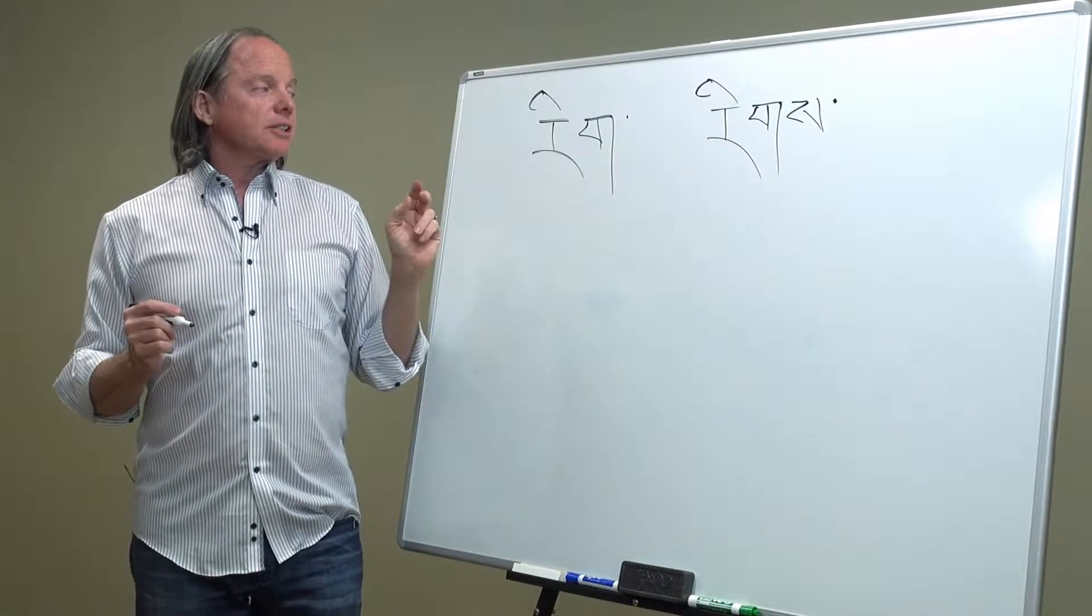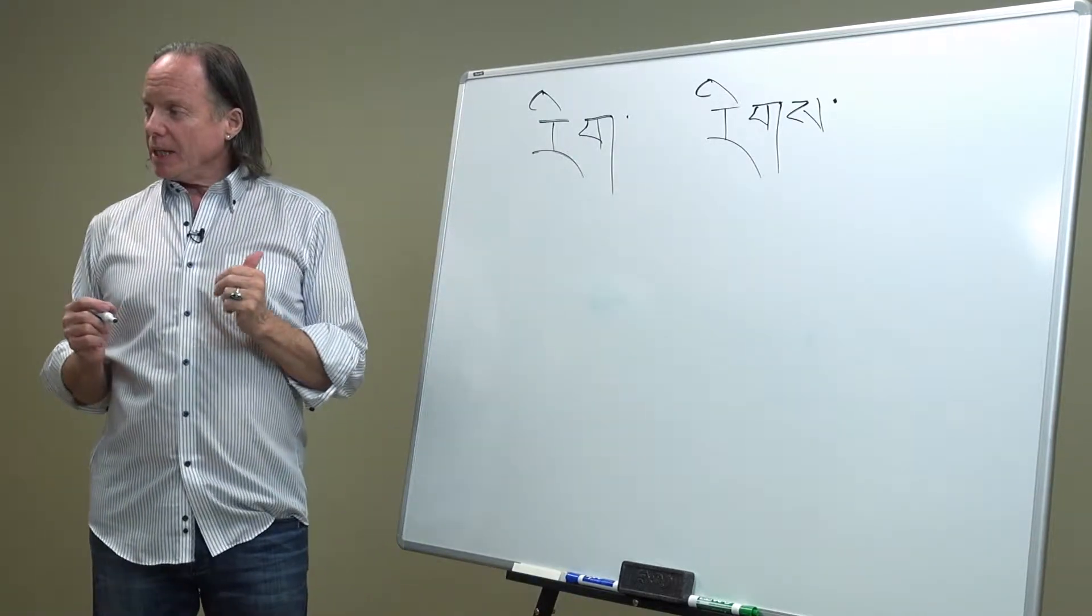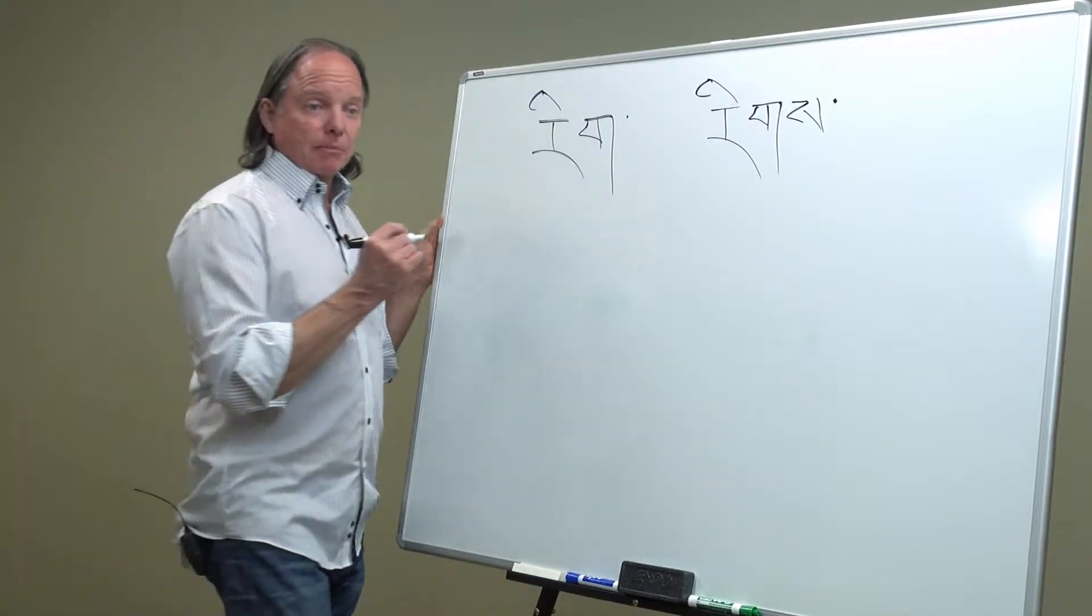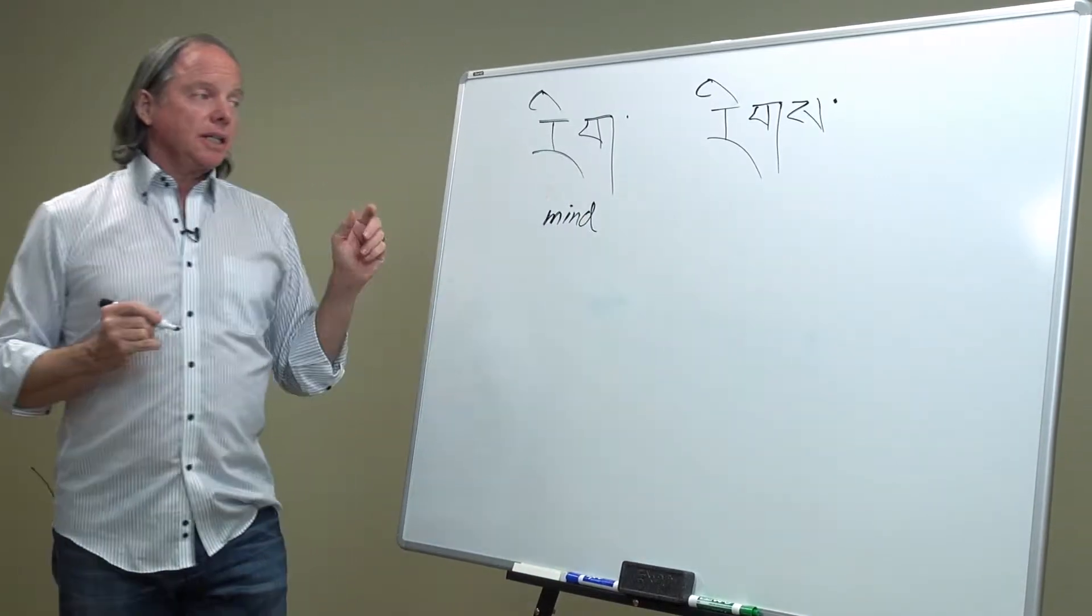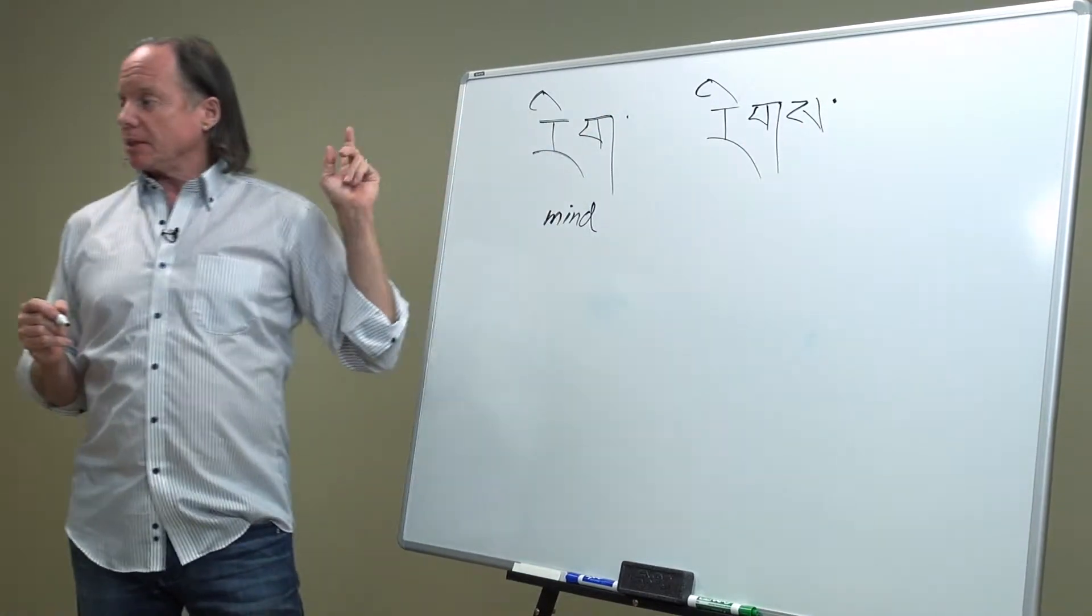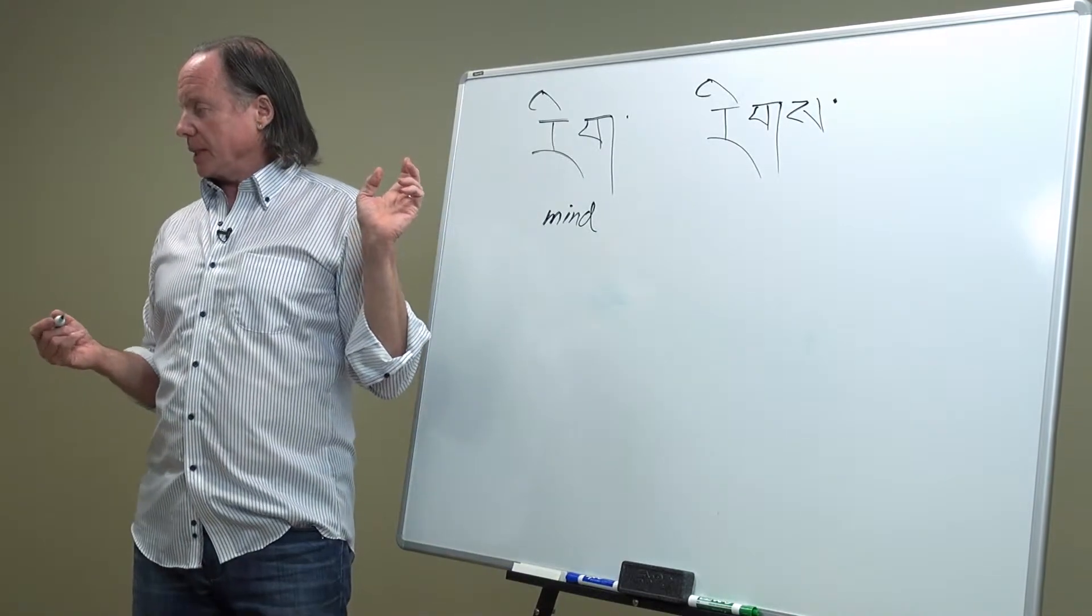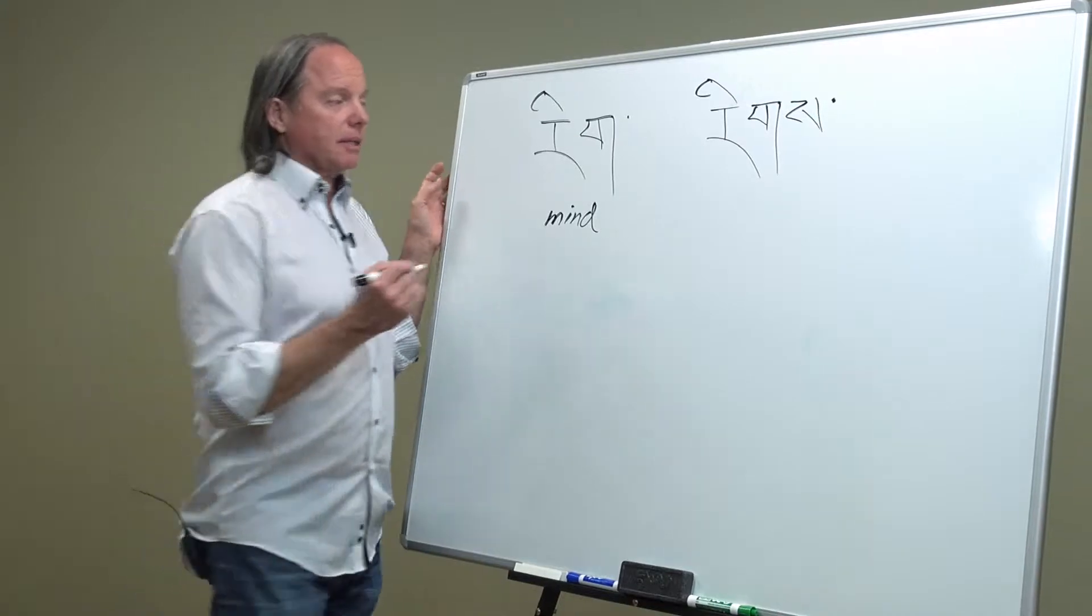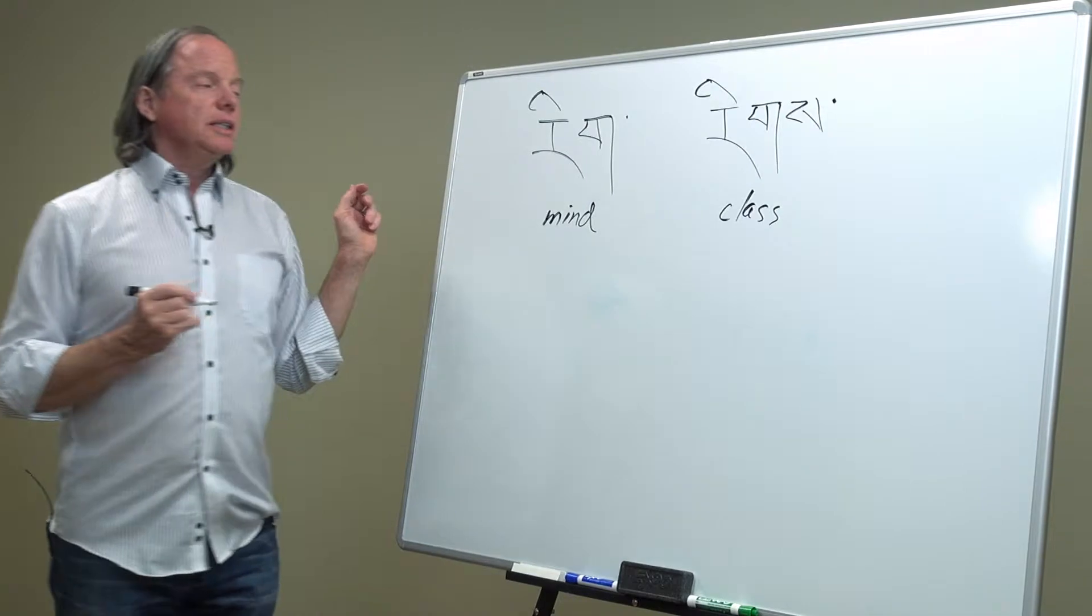And that changes the meaning. Any idea about the meaning of either one of these? Rikpa? Rikpa meaning mind. And rik with an s means type or class or family. Like rikna are the Buddhas of the five families. So this becomes a totally different word meaning class with the secondary suffix letter. The secondary suffix letters are silent. You don't hear them.